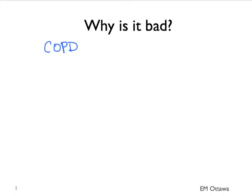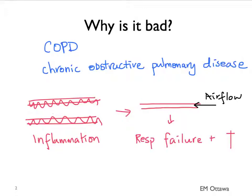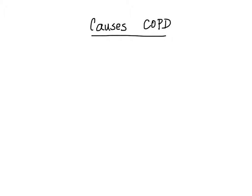Why is COPD bad? Patients with COPD or chronic obstructive pulmonary disease have chronic inflammation of the entire tracheobronchial tree. That inflammation leads to obstruction of airflow that causes respiratory failure and death. COPD is mostly caused by smoking, and a minority of patients have COPD because of alpha-1 antitrypsin deficiency.